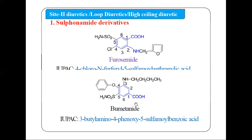The second sulfonamide derivative is bumetanide. Bumetanide is a benzoic acid derivative. At position 1 we have COOH, at position 3 we have butylamino (a butyl chain with an N-amino group), at position 4 we have phenoxy, and at position 5 we have sulfamoyl. So it is named: 3-butylamino-4-phenoxy-5-sulfamoyl benzoic acid.